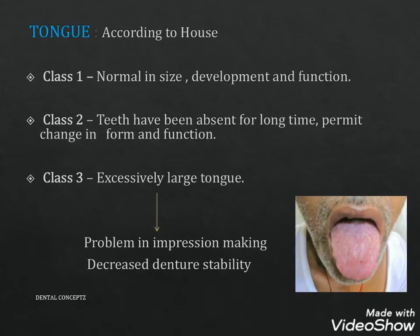Coming to the tongue, according to House: Class 1 is of normal size, development and function. In Class 2, teeth have been absent for a long time which permits changes in common function of the tongue. In Class 3, the tongue is excessively large, which creates problems in impression making and results in decreased denture stability.